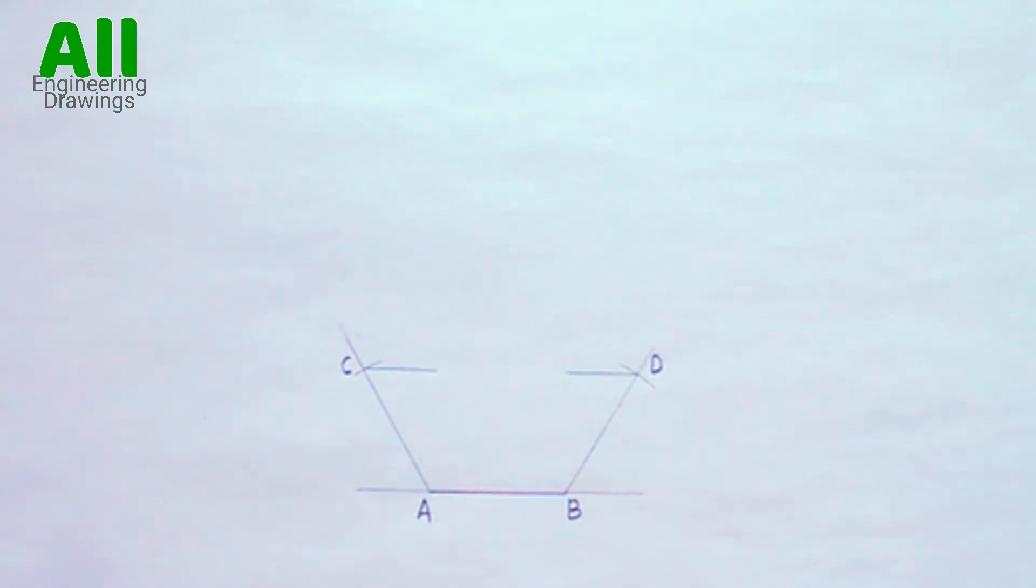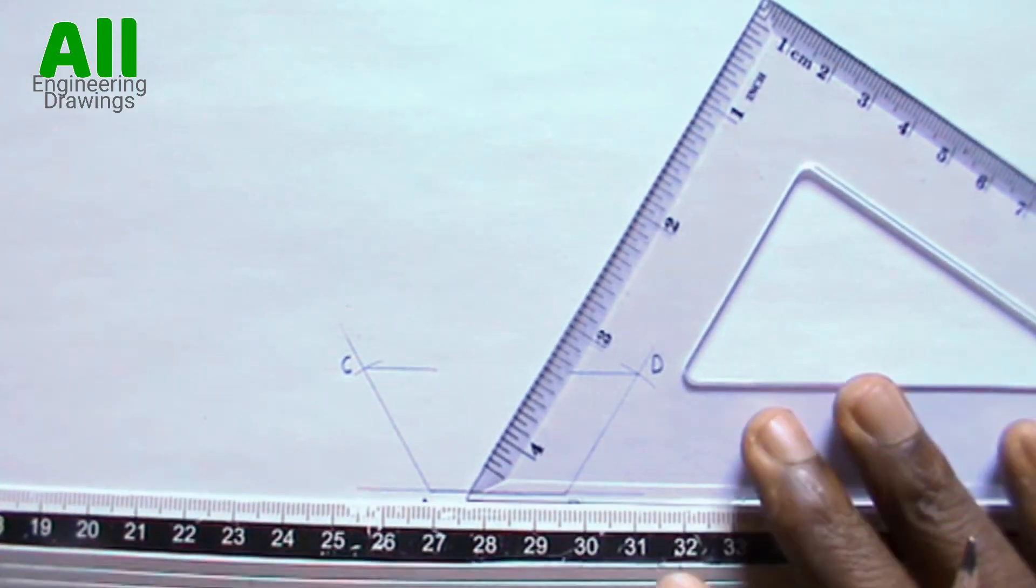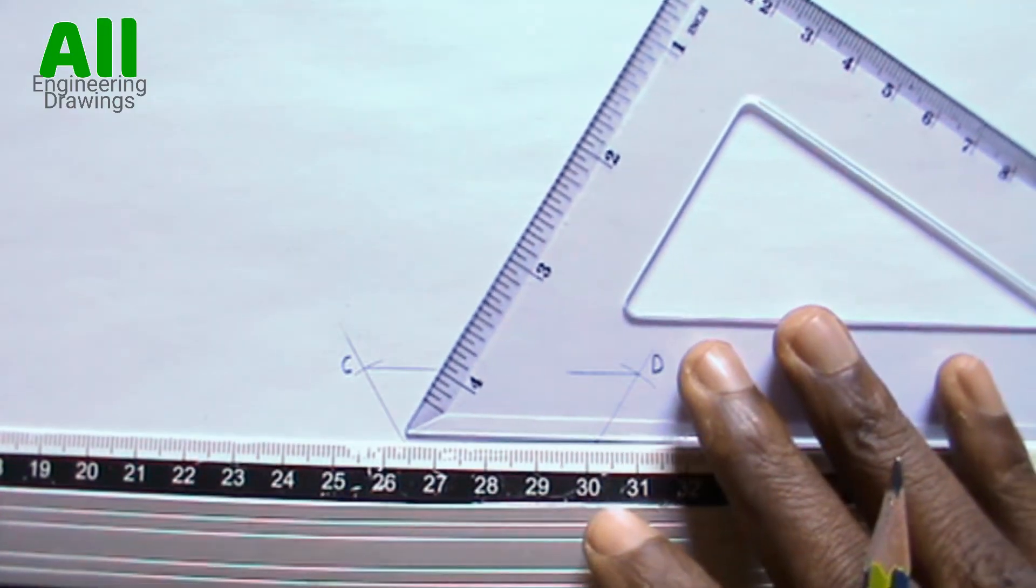Now draw lines inclined at 60 degrees to the horizontal at point C and point D.